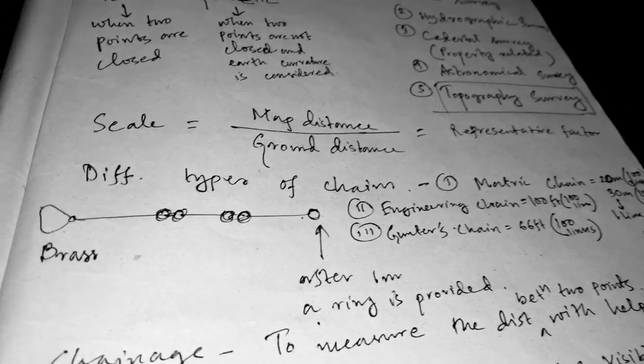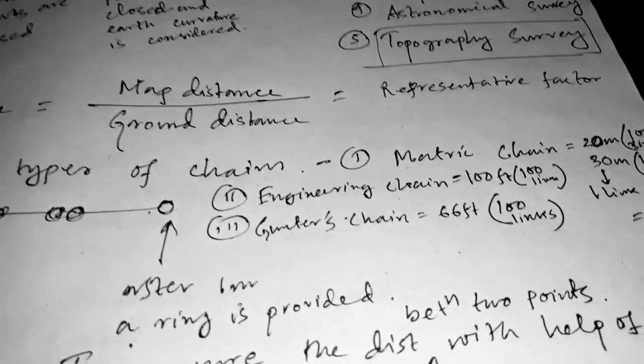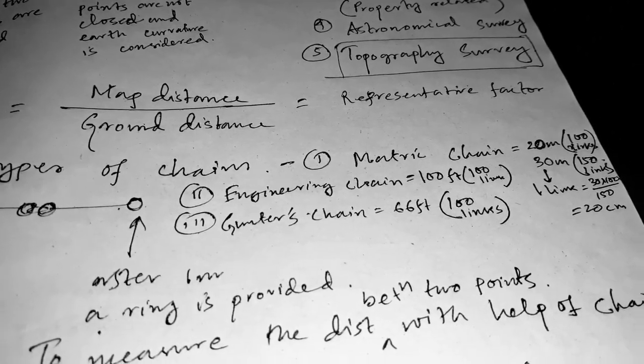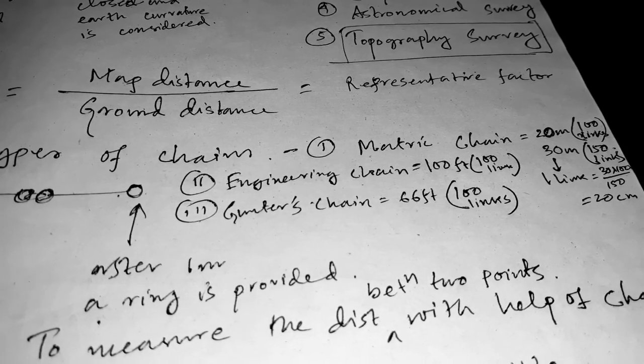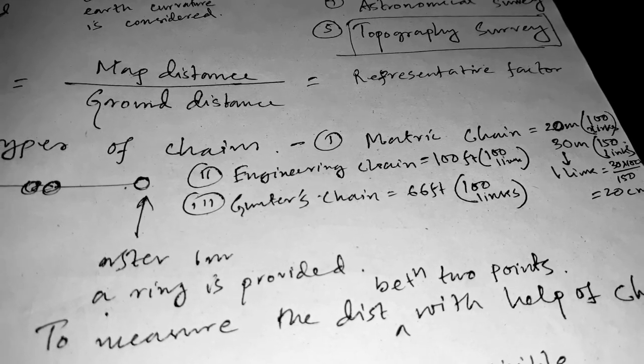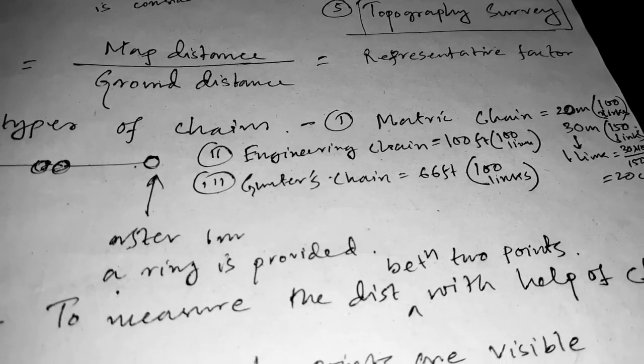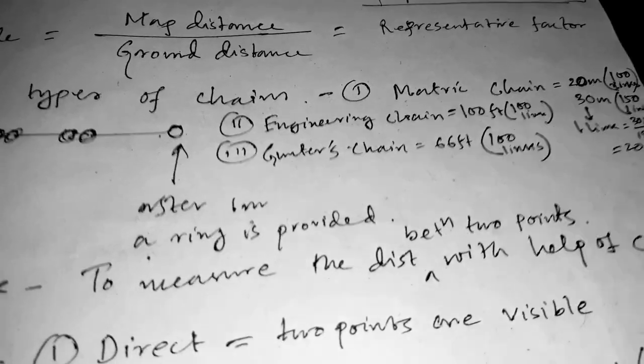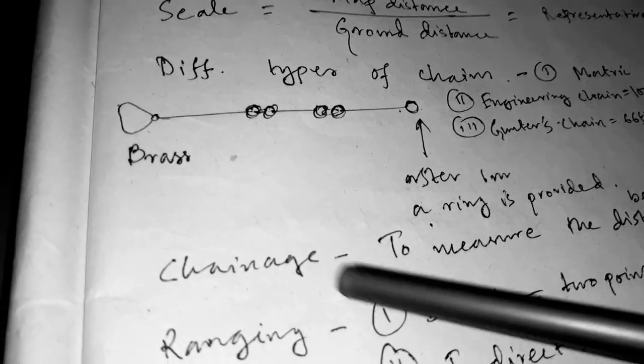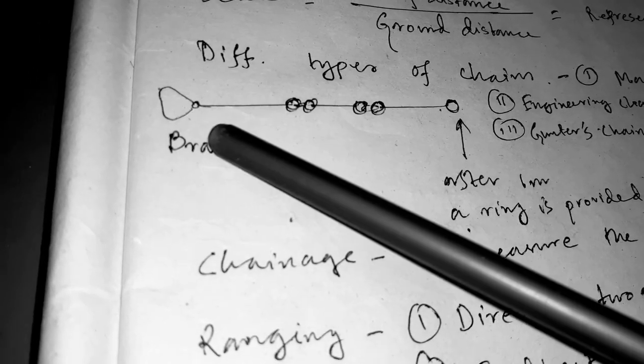Now let us know about the different types of chains. Number one is metric chain. Metric chains are 20 meters in length and there are 100 links provided. When we look at the chain, there is brass. There will be a lot of links, brass handle is within the chain.